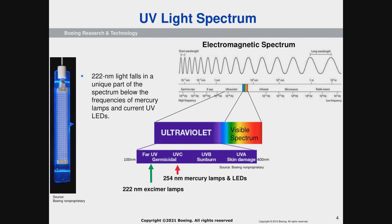When you get down to UVC, which begins around 280 nanometers, that's no longer present in sunlight. That's one of the reasons why it is germicidal — microbes haven't developed defenses against it since it's not normally present in sunlight. Mercury lamps are at 254 nanometers, and down in the far UV range is 222. That's what we're going to be really focusing on today — 222 and how it's different from existing wavelengths.